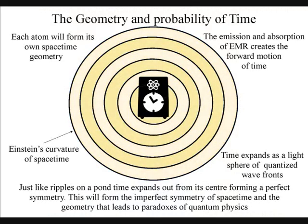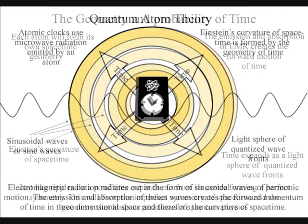In quantum atom theory, time has geometry and asymmetry that can explain the probability and non-locality of quantum physics.